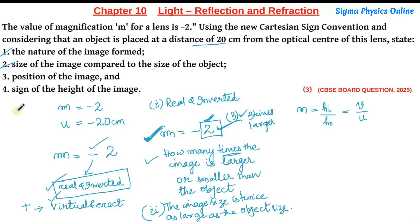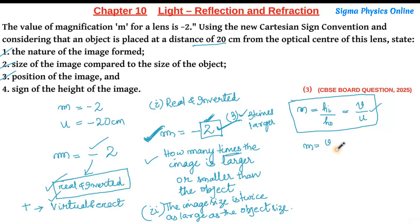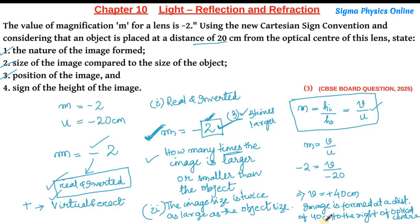For the third part — position of the image — we use the formula m = v/u. Magnification is minus 2 and u is minus 20 centimeters, so this gives v = plus 40 centimeters. The image is formed at a distance of 40 centimeters to the right of the optical center. So the position of the image is plus 40 centimeters.